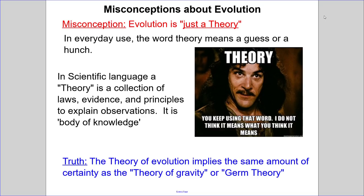All right, let's review those myths. The first misconception is that evolution is 'just a theory.' In everyday use, the word theory means a guess or a hunch or maybe a hypothesis. But in scientific language, theory — sometimes with a capital T — means more like a body of knowledge. It's a collection of observations, facts, laws, and principles used to explain a general phenomenon. So when people say 'theory of evolution,' they're referring to the entire collection of evidence and irrefutable facts that show evolution has occurred. It's not just a guess.